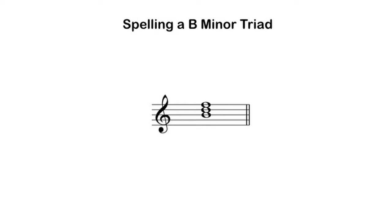A minor third above B is the pitch D, and a major third above D is the pitch F sharp. I can double-check my spelling by making sure that F sharp is a perfect fifth above B, and it is.